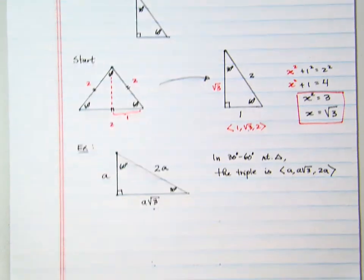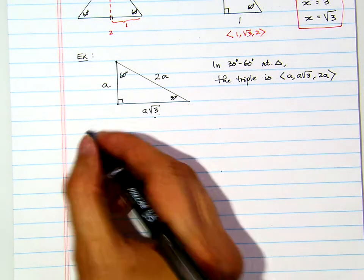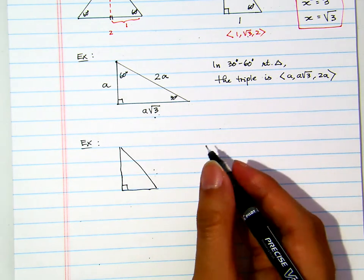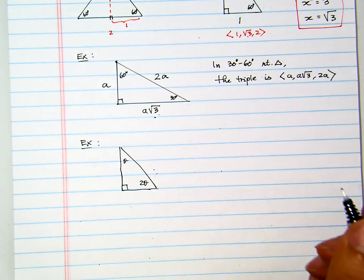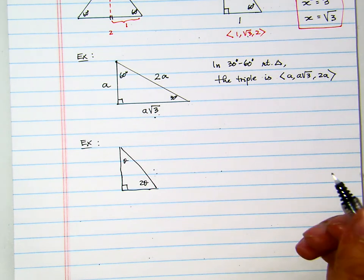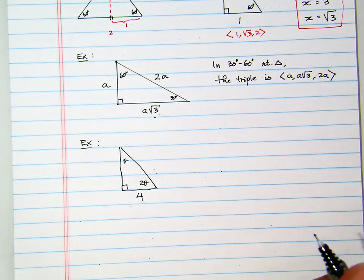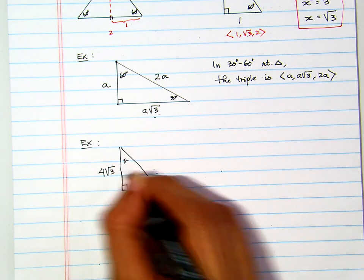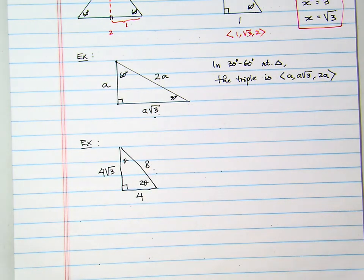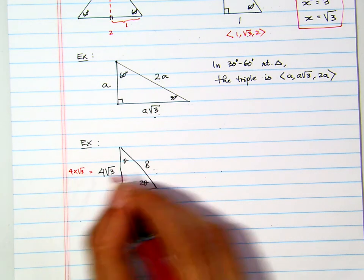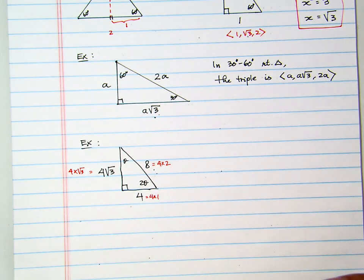Now, why do we want to know this? Well, because we see this quite often. For example, suppose I have a 30-60-90 triangle where sometimes they express it as theta, theta, and 2-theta. And the only way that can happen is when you have a 30-60-90 degree right triangle. Suppose this side opposite 30 degrees is 4. Then this will be 4-radical-3, and the hypotenuse will be 8. That's because 4 is 4 times 1, so you multiply each component of the triple by 4, giving 4 times radical-3 and 4 times 2. This is the idea of multiples of the triple.